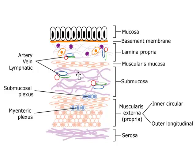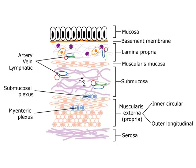Beneath the muscularis mucosa is the submucosa. This is also a layer of connective tissue, not quite as loose as that of the lamina propria, but not necessarily very dense irregular connective tissue either. In this submucosal connective tissue, we find the major arteries, veins, and lymphatic vessels which supply the wall of the gut. Branches of these larger vessels are also seen as smaller vessels in the lamina propria just underneath the epithelium.